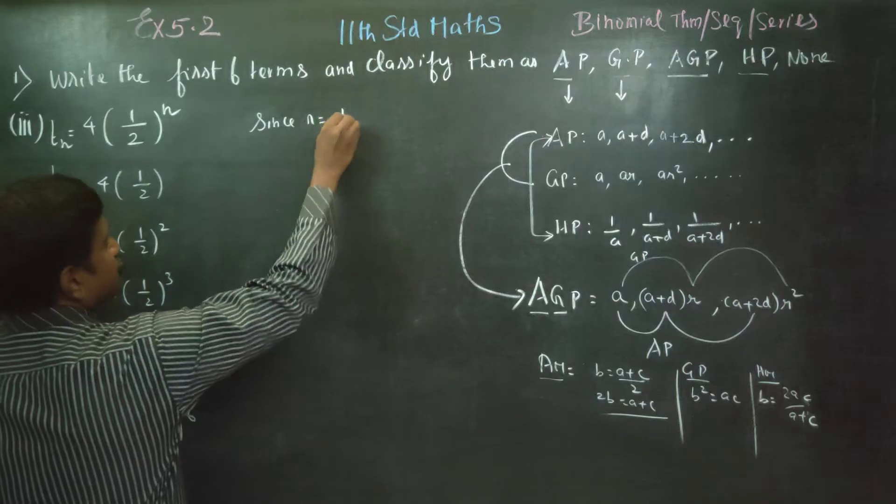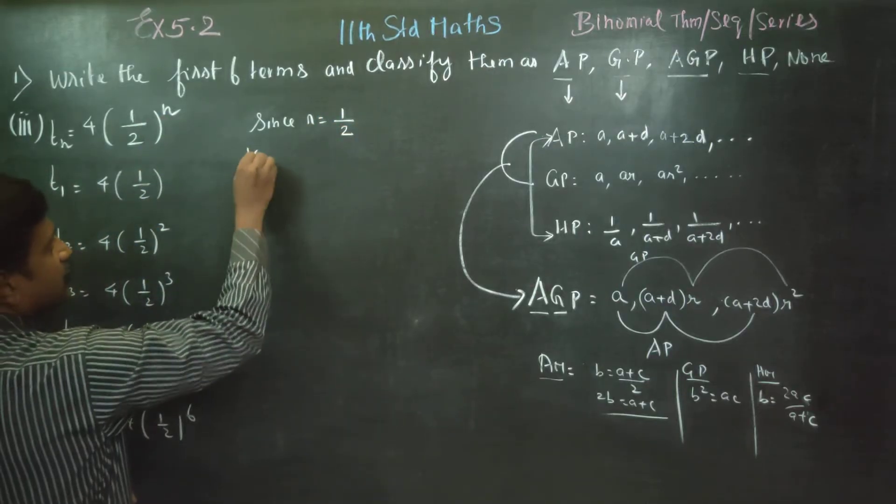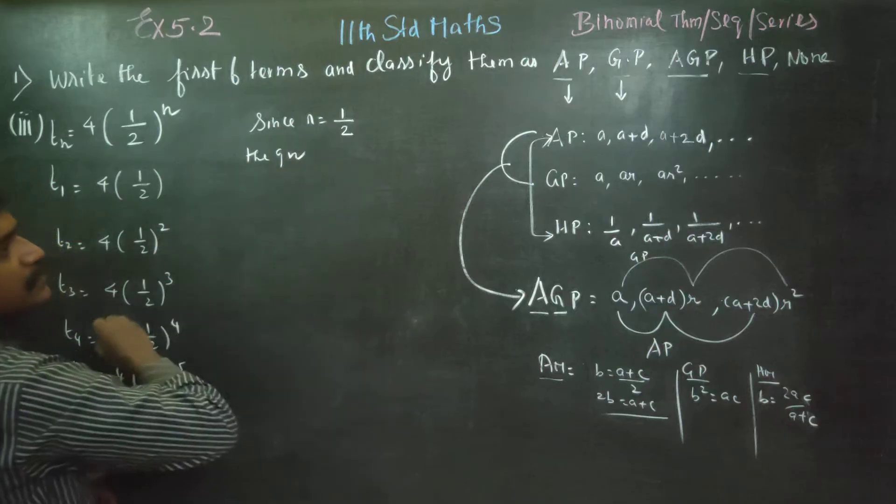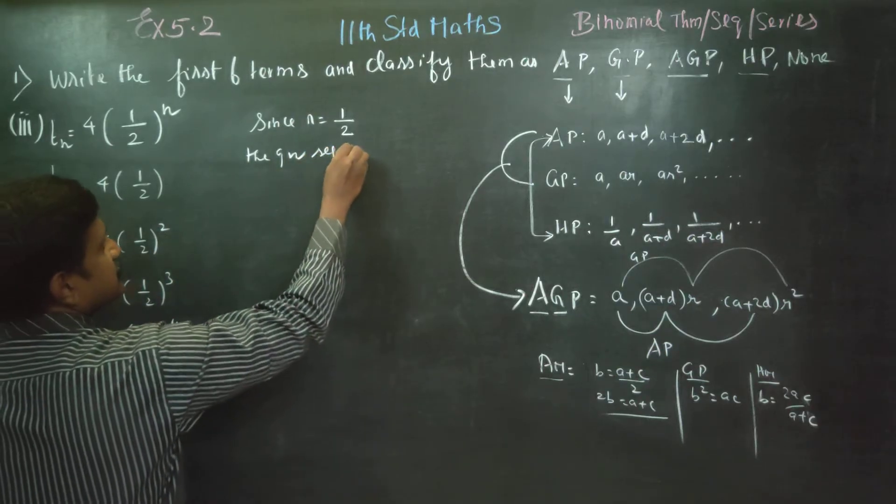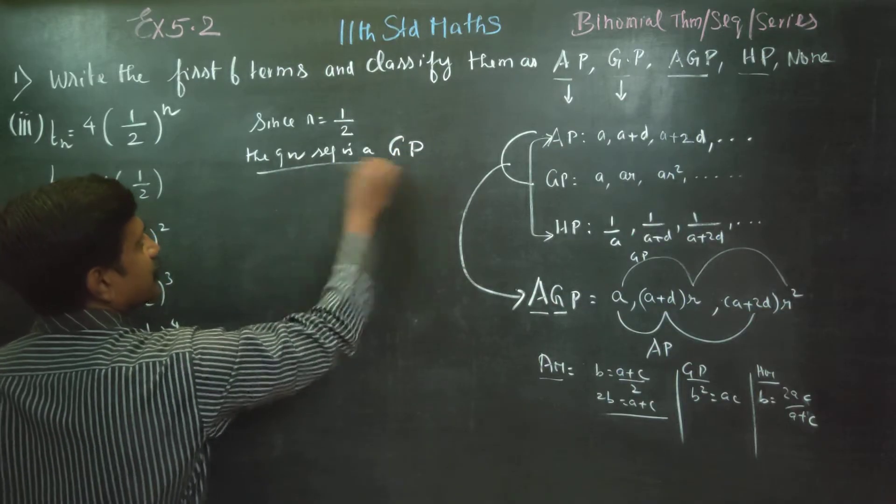Since common ratio is equal to 1 by 2, the given sequence is a Geometric Progression, one step.